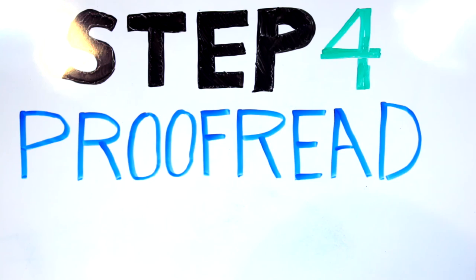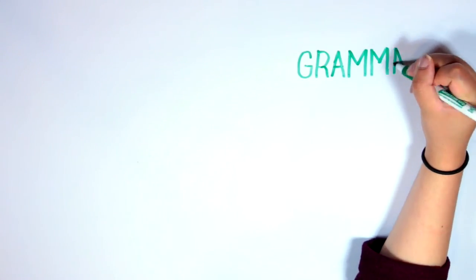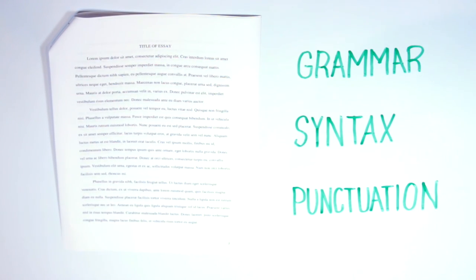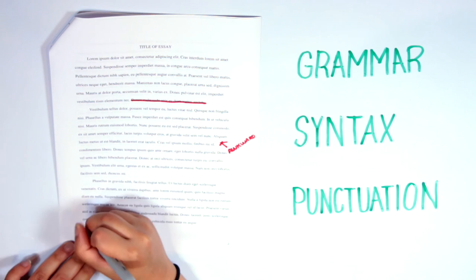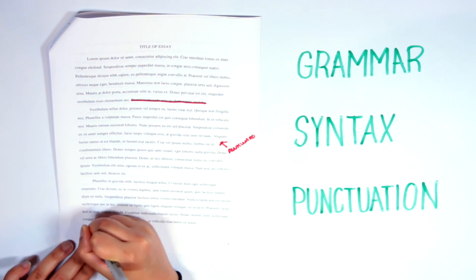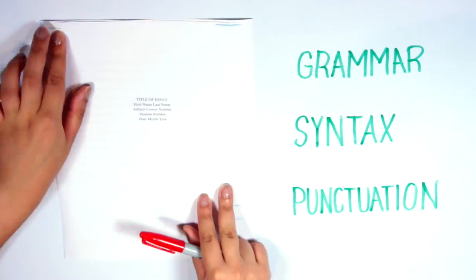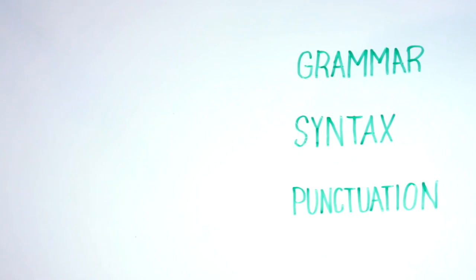Step 4: Proofread and finalize. Now that you've completed your revision, you're ready to proofread. Look out for errors in grammar, syntax, and punctuation. Printing out a copy of your draft and proofreading the old-fashioned way makes this process a lot easier. Avoid using automatic spelling and grammar checkers, as nothing can substitute your own judgment. Also make sure the appearance of your paper, for example cover page, page numbering, and double spacing, meet your instructor's specifications.